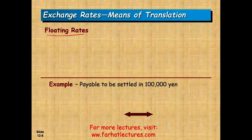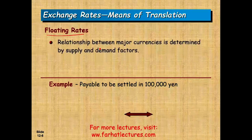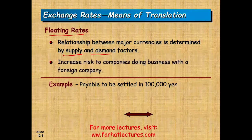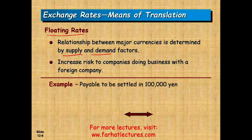A floating rate means the rate between currencies always fluctuates, which is why we have to learn this chapter. The relationship between major currencies is determined by supply and demand factors, political risk, and economic risk. This increases the risk for companies doing business with foreign companies. When you buy goods and services from a foreign company and have to pay in their currency, you might be taking a risk.